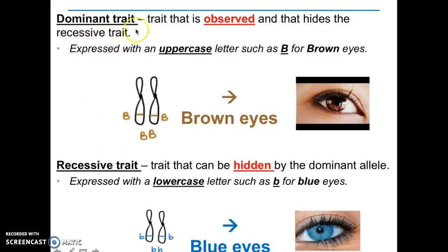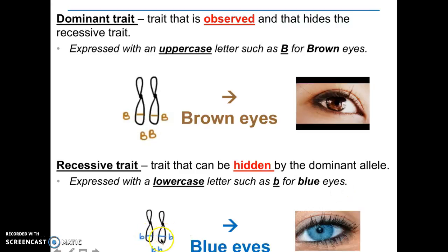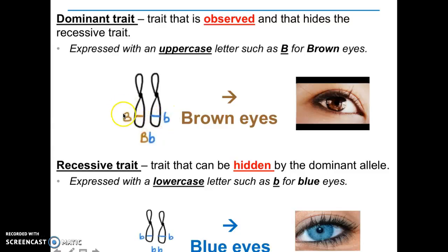Now, the difference between dominant and recessive: a dominant trait is a trait that is observed and that hides the recessive trait. When you have two different alleles, the dominant trait will always be expressed — represented with an uppercase letter such as capital B for brown eyes. A recessive trait is a trait that can be hidden by the dominant trait, usually expressed with a lowercase letter such as little b for blue eyes. If an organism has big B little b, the big B will be expressed as brown eyes.